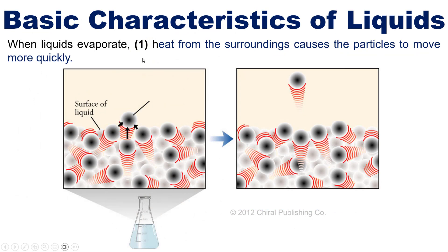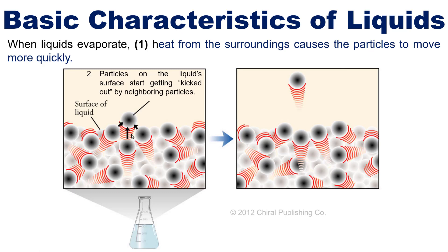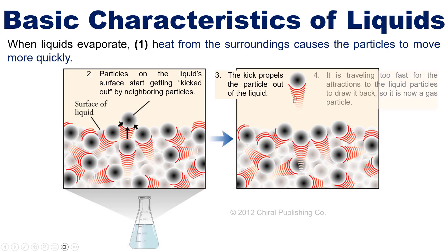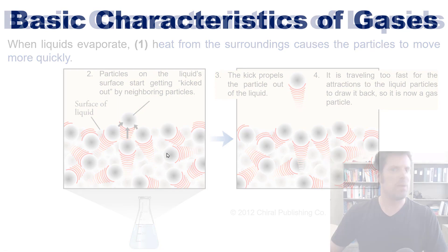When liquids evaporate, heat from the surroundings causes the liquid particles to move more and more quickly. Eventually, particles on the top of the liquid — the liquid surface — start getting kicked out by neighboring particles moving with increasing speed. This kick propels a particle out of the liquid, meaning it is now traveling too fast for the attractions from the liquid particles below to draw it back in, which converts it into a gas molecule. This is how, at a molecular level, liquids convert into gases.